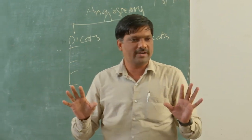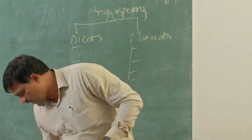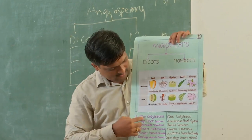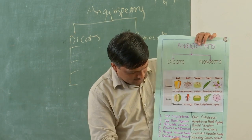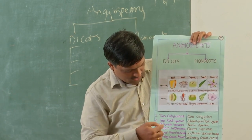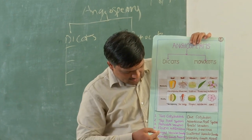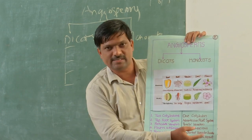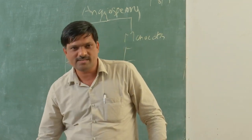Let me summarize. Dicot characters: two cotyledons, tap root system, reticulate venation, flowers with four or five parts, ringed vascular bundles, secondary growth present. Monocot characters: one cotyledon, adventitious root system, parallel venation, flowers trimerous, scattered vascular bundles, secondary growth absent.